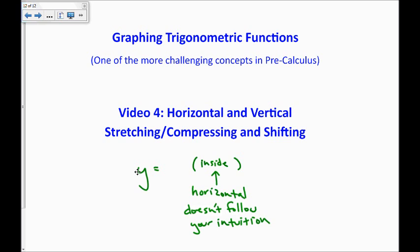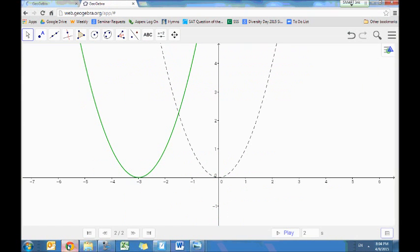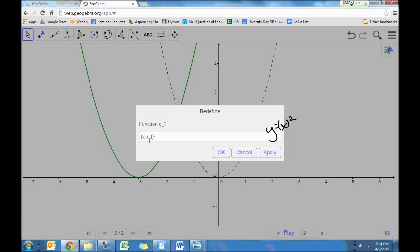Before we get into what happens outside, let me show you some graphs of one that I think you'll be more familiar with. And here's the graph. The dotted line is the graph y equals x squared. And I'm going to do horizontal changes to this affecting what is inside the parentheses. So here is the graph.